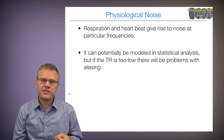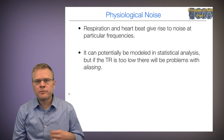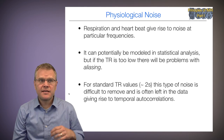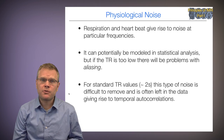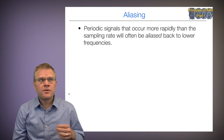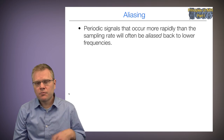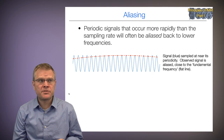Respiration and heart rate also give rise to noise at a particular frequency. It can potentially be incorporated in our statistical models, but if the TR is too low or the time resolution is too low, there might be a problem with something called aliasing. For standard TR values of roughly two seconds, this type of noise is difficult to remove and is often left in the data, giving rise to temporal autocorrelations. Periodic signals that occur more rapidly than the sampling rate will often be aliased back into lower frequencies.